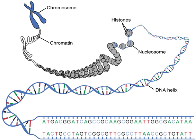=== Character encoding === String datatypes have historically allocated one byte per character, and although the exact character set varied by region, character encodings were similar enough that programmers could often get away with ignoring this, since characters a program treated specially — such as period, space, and comma — were in the same place in all the encodings a program would encounter. These character sets were typically based on ASCII or EBCDIC. If text in one encoding was displayed on a system using a different encoding, text was often mangled, though often somewhat readable.